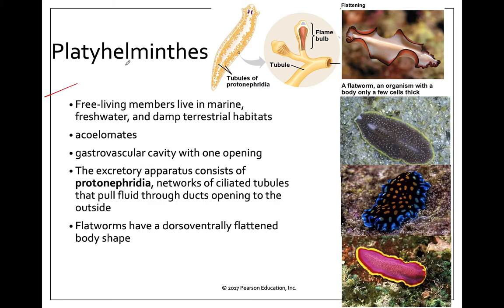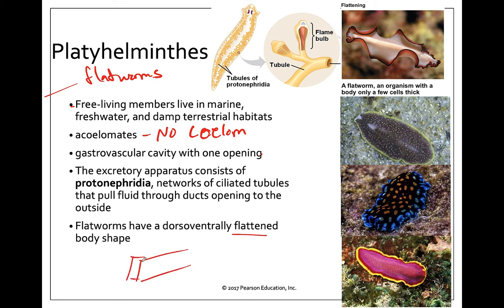Platyhelminthes are the flatworms. They are acoelomates, so they have no coelom — no body cavity — and they have a gastrovascular cavity with one opening, so they have a shared mouth and anus. Most are free-living, such as planarians and many marine and freshwater flatworms. These flatworms are obviously flattened, giving them a very high surface area to volume ratio, and they are able to absorb oxygen through their skin since almost all of their cells are close enough to the water.